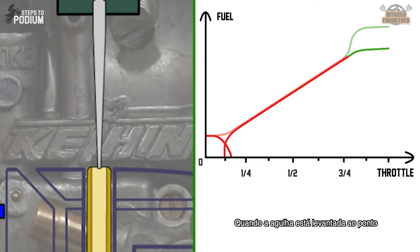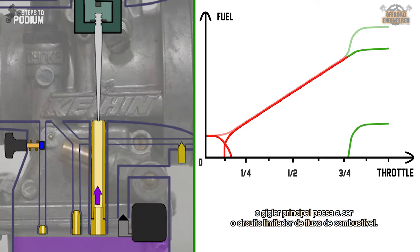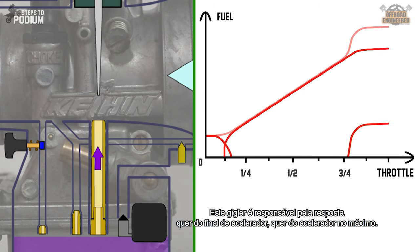When the slide is high enough so that the needle is no longer blocking the needle jet, the main jet becomes the limiting system for fuel flow. This jet is responsible for the end of throttle response and full throttle.